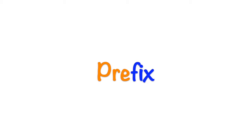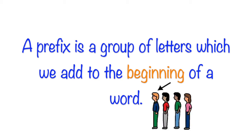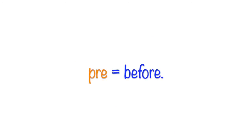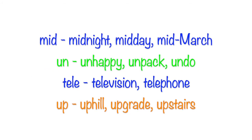Now let's move on to a prefix. If a suffix is put at the end of a word, where do you think we put a prefix? I think you guessed. A prefix is a group of letters which we add to the beginning of a word. 'Pre' in prefix means before. Some examples of prefixes are: 'mid', like midnight, midday and mid-March; 'un', like unhappy, unpack and undo; 'tele', like television and telephone; and 'up', like upstairs and uphill.